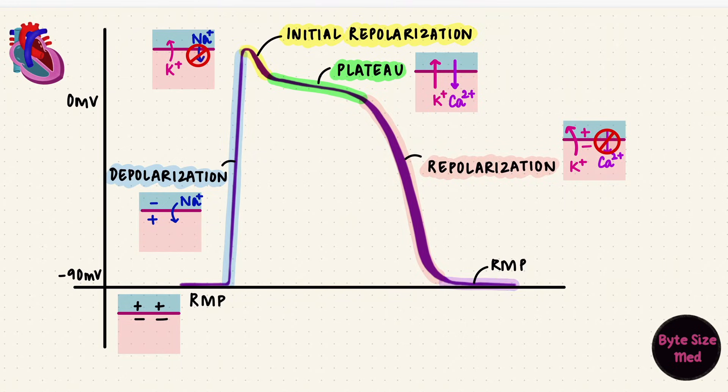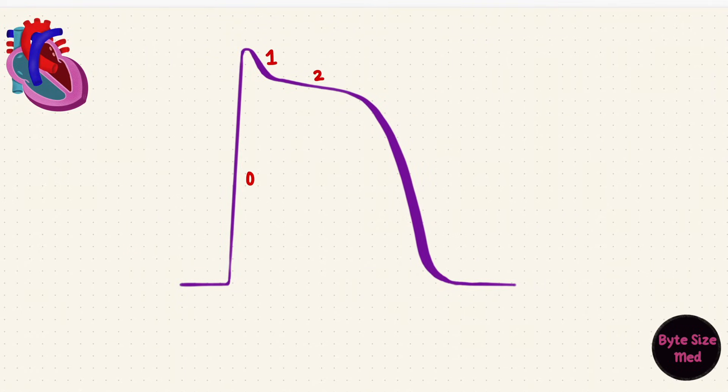And then the membrane potential reaches its resting value again. That's phase four. So those are the five phases of the action potential.